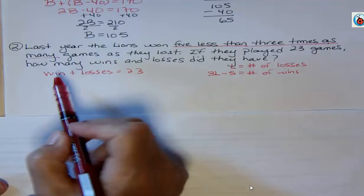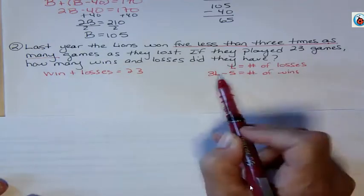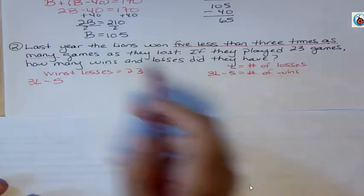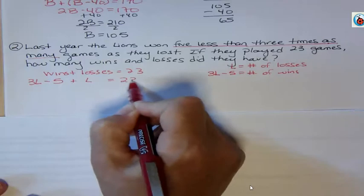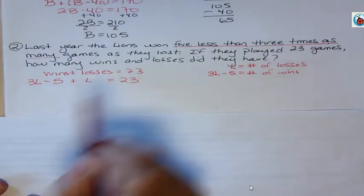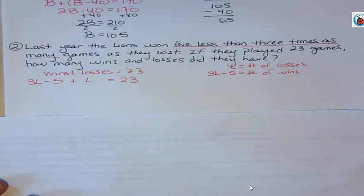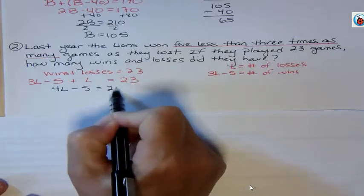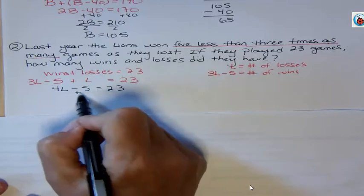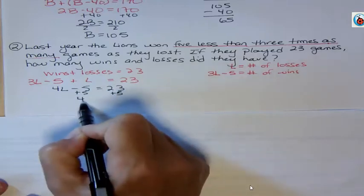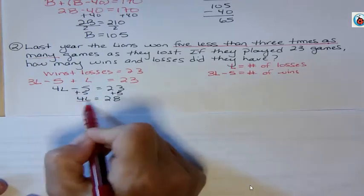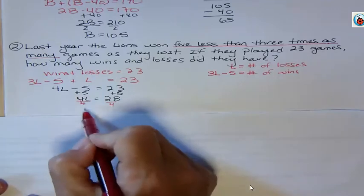Now I'm going to go back and say, here's my equation. Instead of wins, I'm going to put in 3L minus 5, and instead of losses, I'm going to put in L. Common mistake is for people to do 3L minus 5 equals 23. They forget that's just the wins. We have to put wins and losses in to finish this equation. 3L plus 1L is 4L. That's combining like terms. And then I want to solve the equation by getting rid of the constant term. I'm going to divide both sides by 4 because I want to get rid of that coefficient. And that gives me L equals 7.